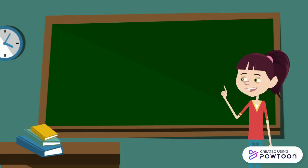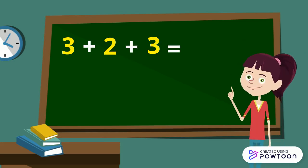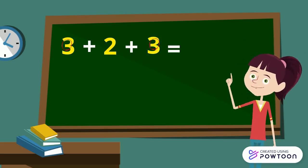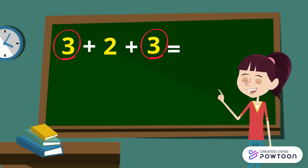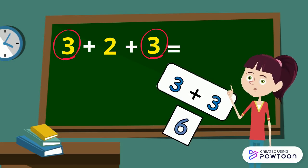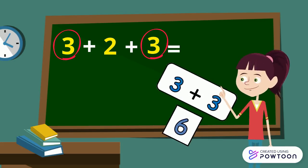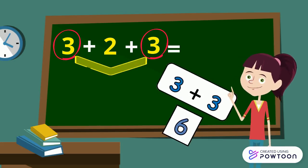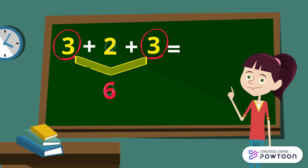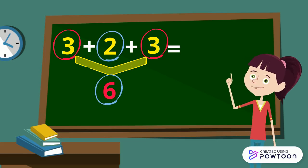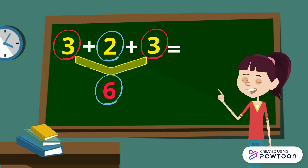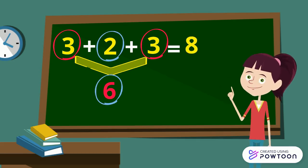Now, 3 plus 2 plus 3. We have 3 and 3. 3 plus 3 is the double of 3, that is 6. Then we add 6 plus 2. The answer is 8.